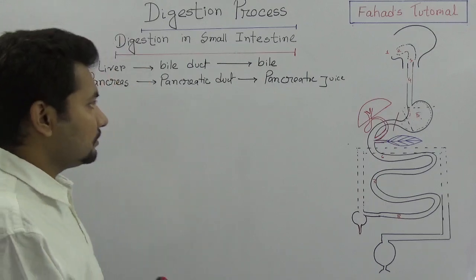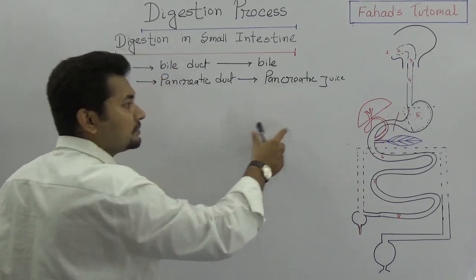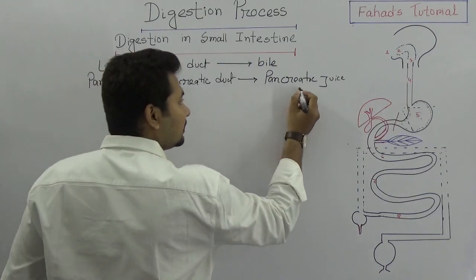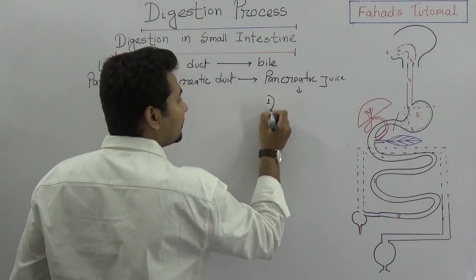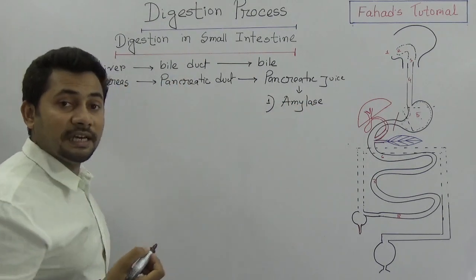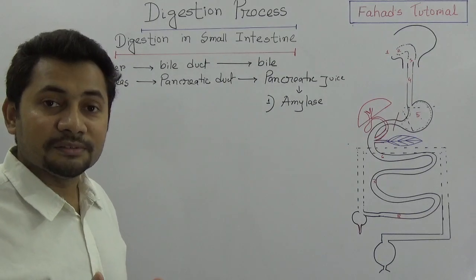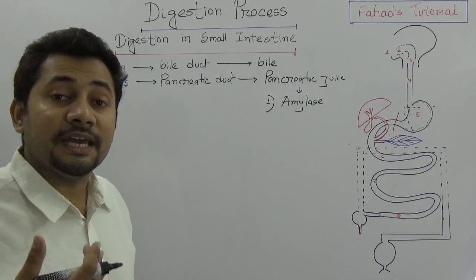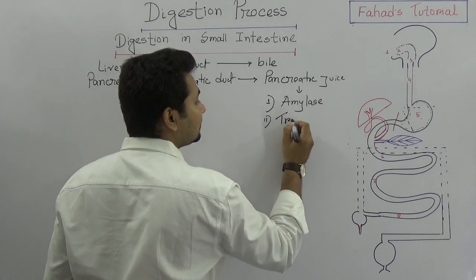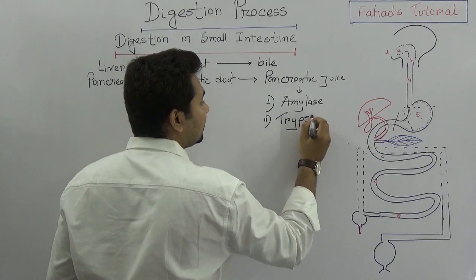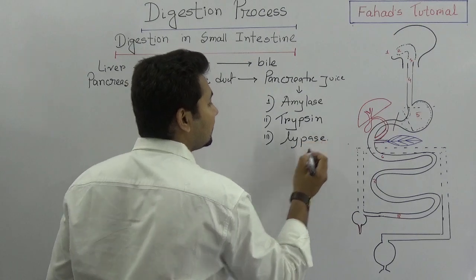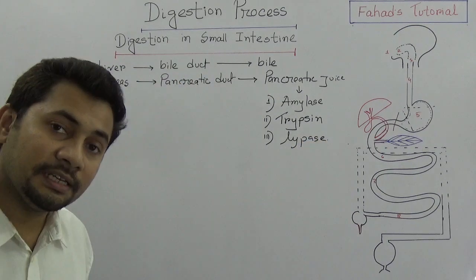In pancreatic juice, there are a number of enzymes. In this class I will mention three: number one is Amylase, which is an amylolytic enzyme that turns starch into glucose. Number two is Trypsin. Number three is Lipase.